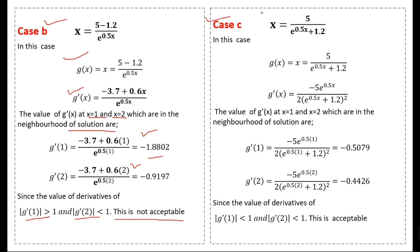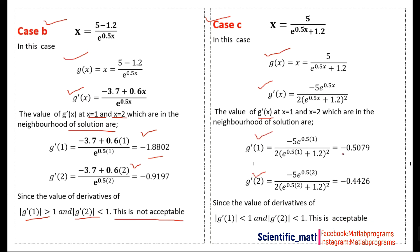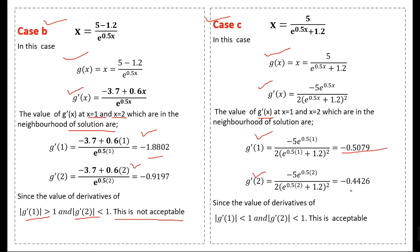We rewrite the equation again in a third form — Case C — giving a new g(x) and its derivative. The computed values are approximately −0.5079 at x = 1 and 0.4426 at x = 2.